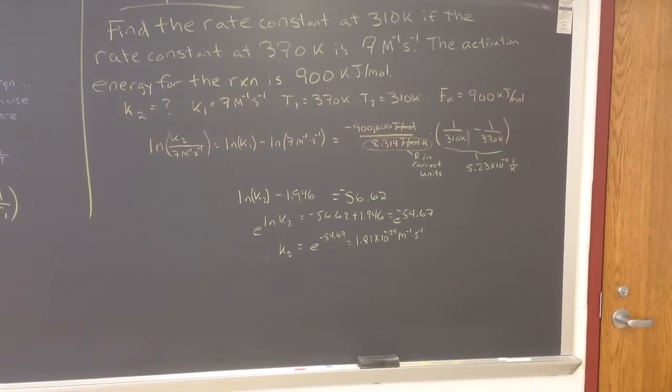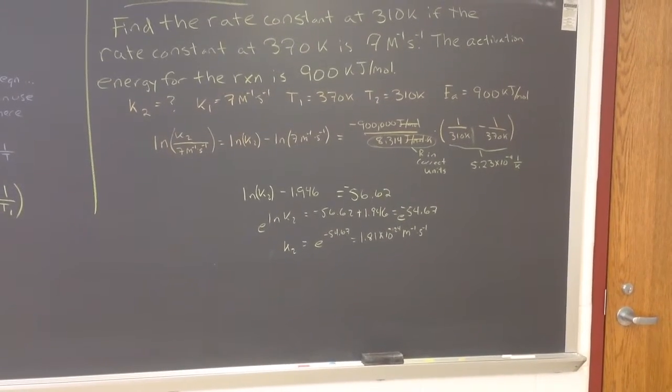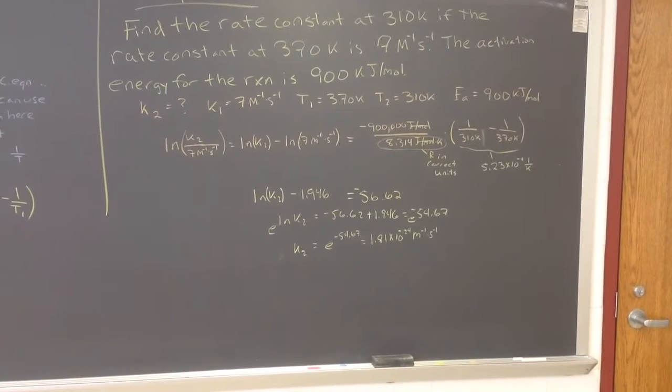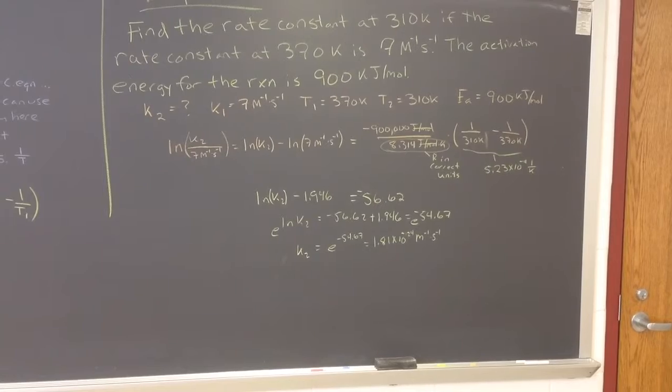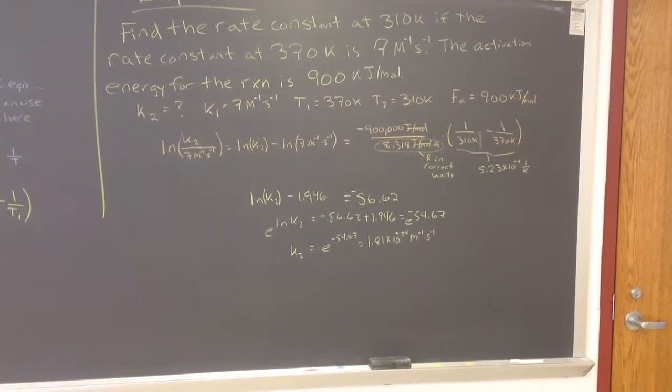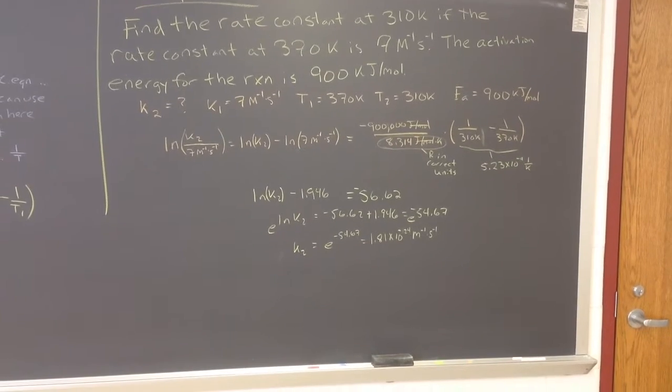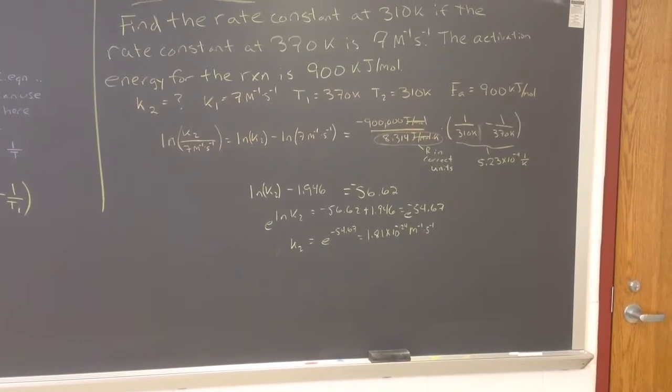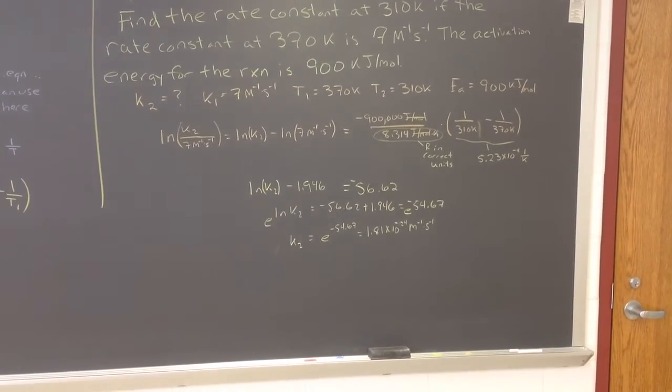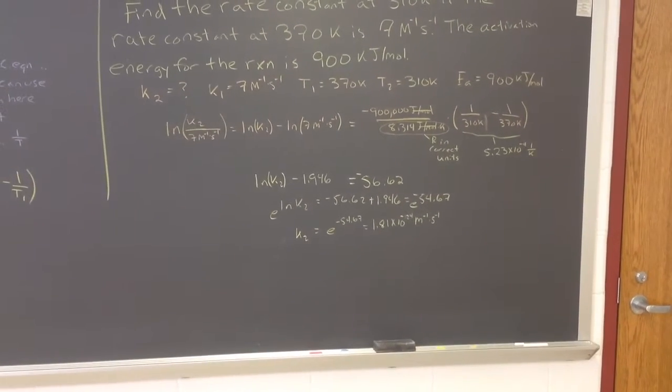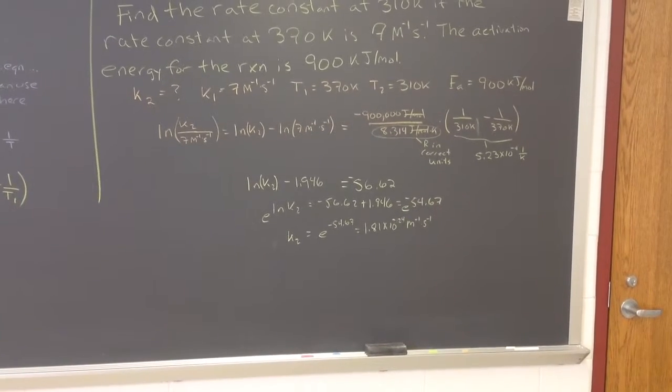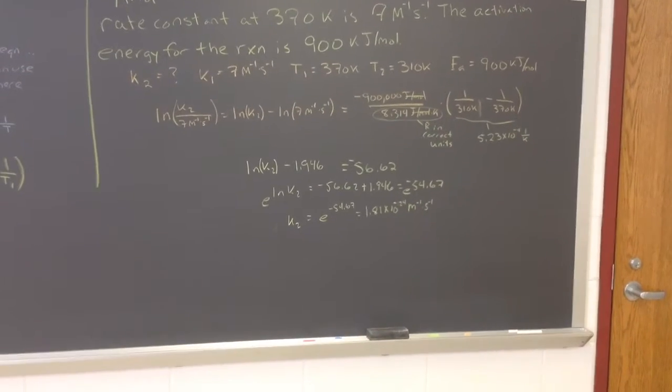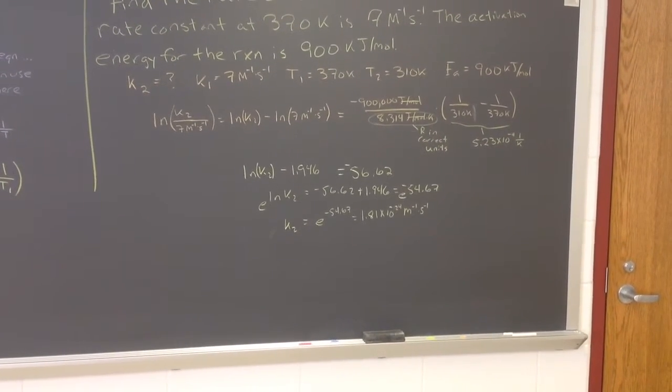The things in parentheses, the 1 over temperatures came out to like 5.2 times 10 to the minus 4, 1 over Kelvin. The negative 900,000 joules per mole divided by the R in the right correct units, 8.314 joules per mole Kelvin. Make sure that we use the appropriate units and always list our units when we're working out problems. Notice those units cancel out. And then if we take the natural log of anything, it's unitless. So now we have the natural log of k2 minus 1.95 roughly equals negative 56.62.